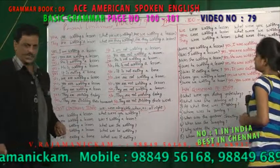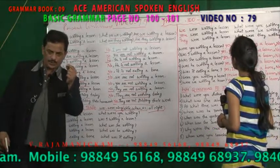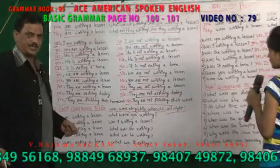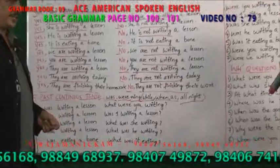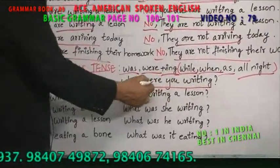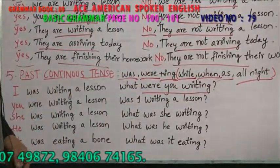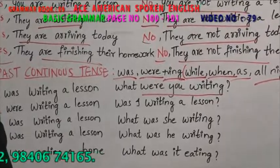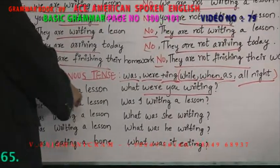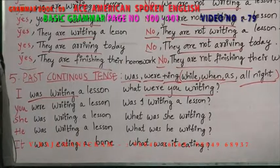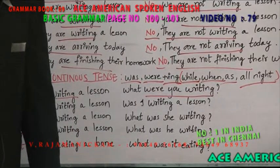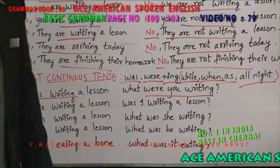When you ask a question in past continuous, the answer should be in past continuous. What were you writing? The answer is: I was writing a lesson. When you ask a question in past continuous, you answer in past continuous. What were you writing yesterday? I was writing a lesson.